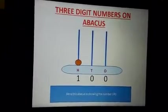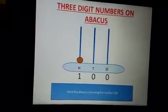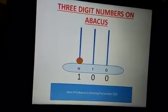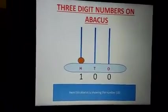We use three spikes to represent a three digit number on abacus. Starting from right, the number of beads in a spike represent number of ones, tens, and hundreds.